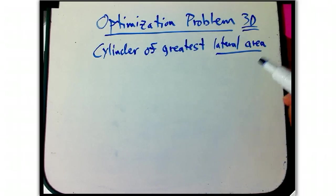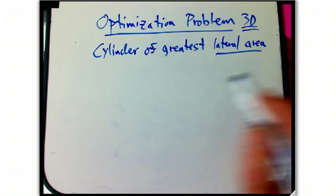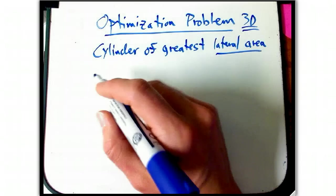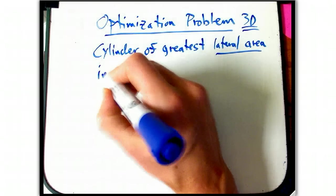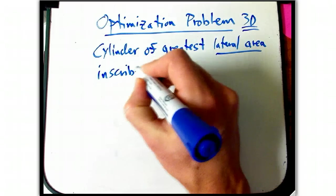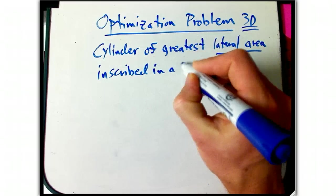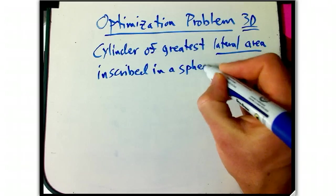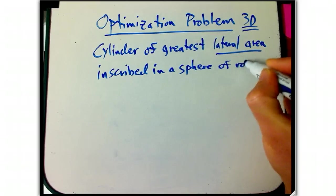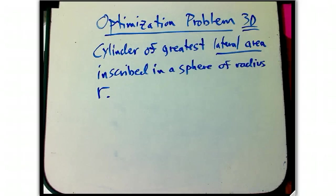You can include the top and bottom too, it's a different problem, it's actually in the book, and the answer is a little more complicated, inscribed in a sphere of radius r.